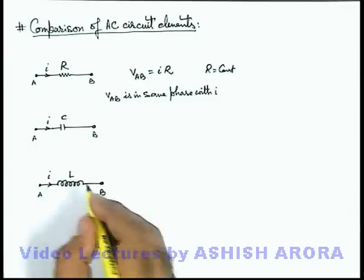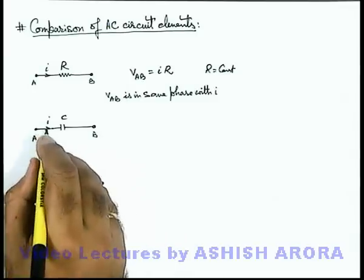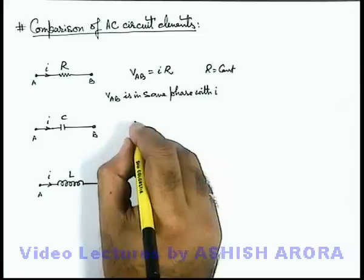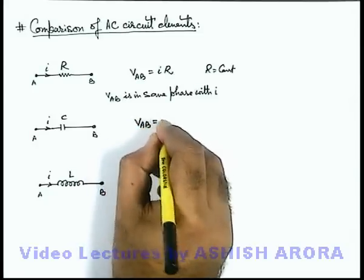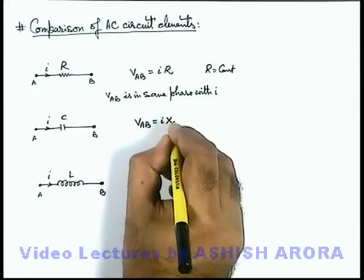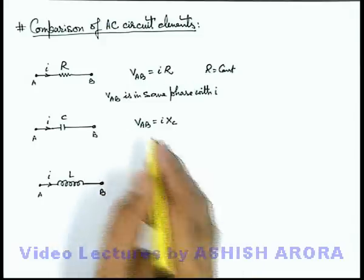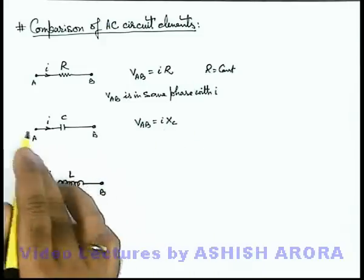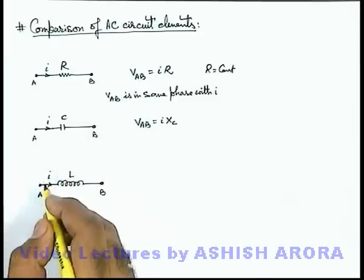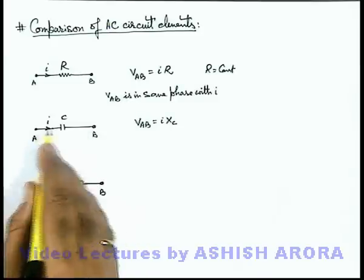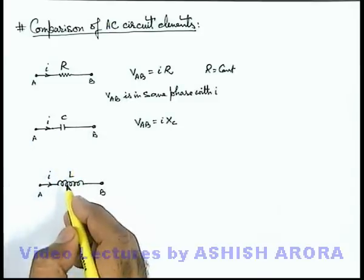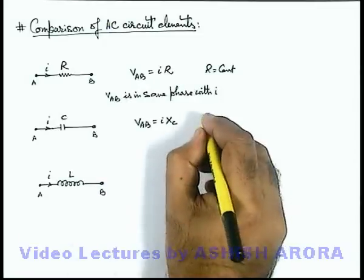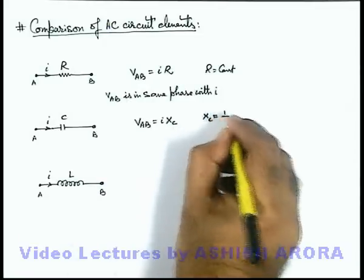If we talk about capacitor, when current i flows through it, the potential difference across the capacitor terminals we can write as V_AB = iX_C. Here I am directly using Ohm's law where X_C is the ohmic opposition of capacitor across the AC terminals when alternating current flows through it. The value of X_C we can write as X_C = 1/(ωC).